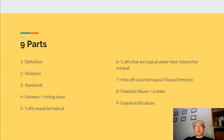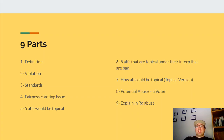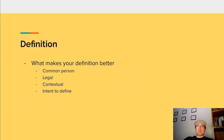There are nine parts to any good 2NR that goes for topicality: definition, violation, standards, explanation as to why fairness is a voting issue, five affs that would be topical, five affs that would be topical under their interpretation that are bad, how the aff could have been topical, why potential abuse is a voter, and an explanation of in-round abuse. We'll start with definition.